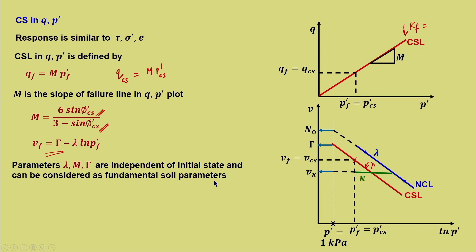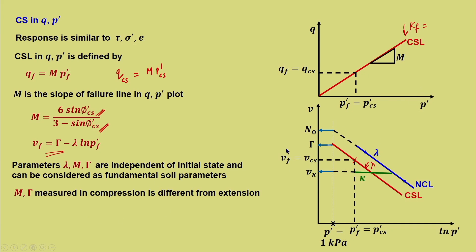Different points on the unloading line relative to NCL give different OCR values, indicating whether the soil is on the wet or dry side of the COCRL. The only purpose of these points in V–ln(P') is to identify initial state. For failure to take place, the soil must yield first — this is an extremely important concept, especially for understanding OC soil behavior. We will introduce this yielding concept shortly.